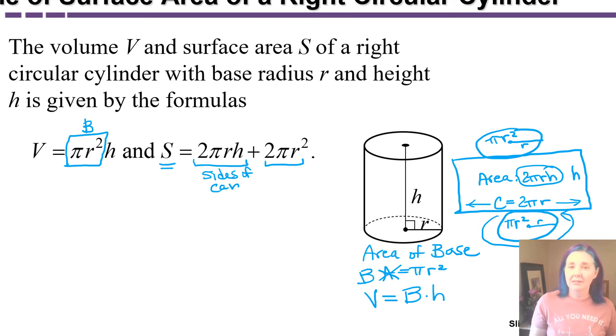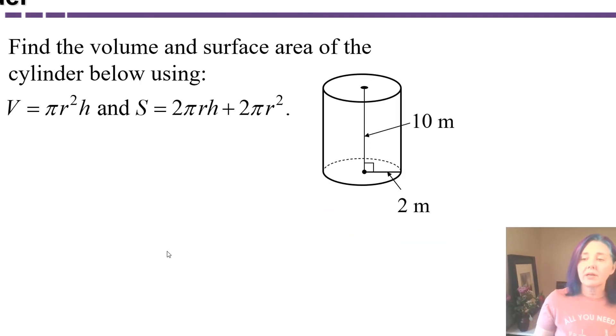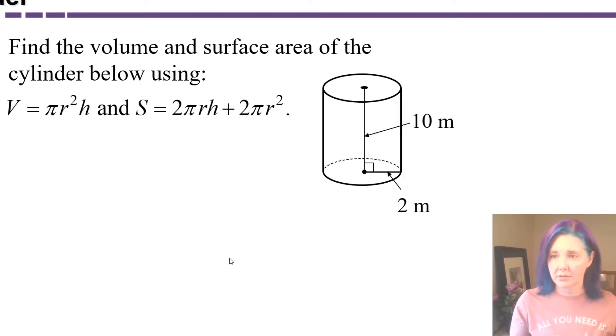Mostly I just need you to recognize that it's the correct formula and use it. So let's try that. Here we have a right circular cylinder that has a height of 10, and a radius of its base is 2 meters. So let's find the volume and the surface area.